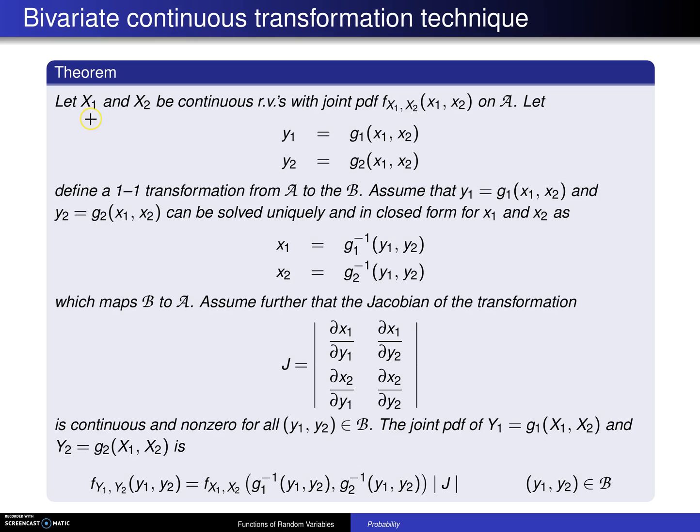So in this theorem, let X1 and X2 be continuous random variables with joint probability density function f of x1, x2 on the support script A. Let Y1 equals g1 of x1, x2 and Y2 equals g2 of x1, x2.